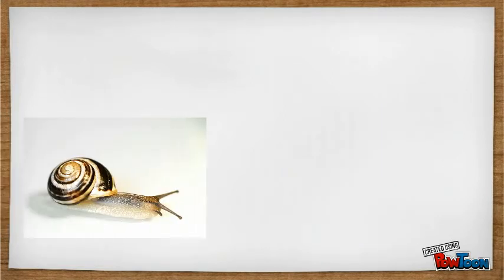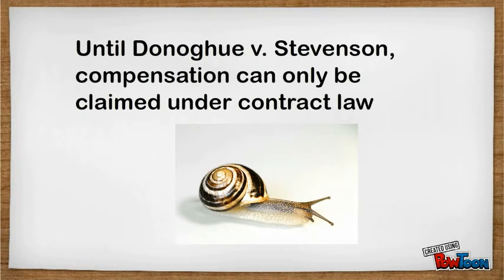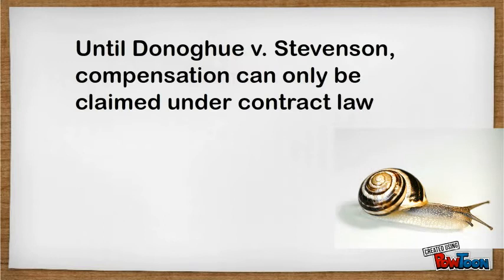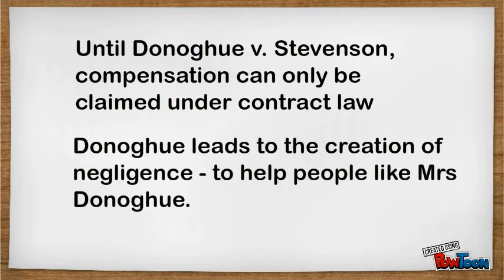It's worth pointing out that if it was the purchaser of the ginger beer who had been made ill, there would have been a right to claim for damages under the contract of sale. But Mrs Donoghue had not purchased the bottle, which left her without much hope at the time of successfully claiming against the café or the manufacturer of the beer. In this case, Lord Atkin created the principles of negligence law to give people like Mrs Donoghue a right of legal action.